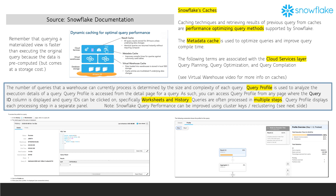A query profile is used to analyze the execution details of a query. The query profile is accessed from the detail page for a query. As such, you can access query profile from any page where the query ID column is displayed, specifically on the worksheets and history.